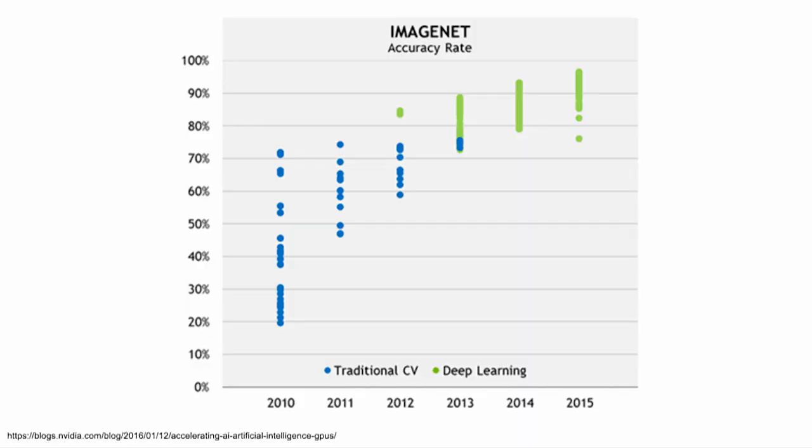One of the things I want to talk about is how amazing the progress has been in this space in very recent years. This is ImageNet accuracy — ImageNet is the benchmark for classifying what's in images. The blue dots are traditional computer vision which involves some machine learning but not a lot, with a lot of hand-tuned features and concrete rules. You can see in the last few years where deep learning has taken over, the accuracies have gone up dramatically. Even more recently, these models are actually better at classifying things than humans are, which is kind of amazing.